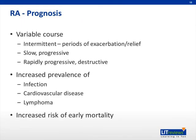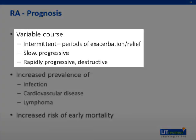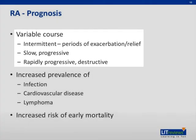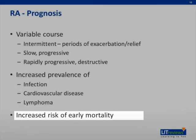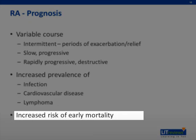In terms of the clinical course of disease, some individuals experience a variable course, including intermittent flares with periods of relief. Others may experience a slow, progressive course leading to disability over time. A smaller subset of patients have a rapidly progressive and destructive course with severe joint damage. Patients with RA also have an increased rate of infection, cardiovascular disease, and lymphoma compared to age-matched populations. There is also an increased risk of early mortality, something which has been improved with therapeutics and an aggressive approach.